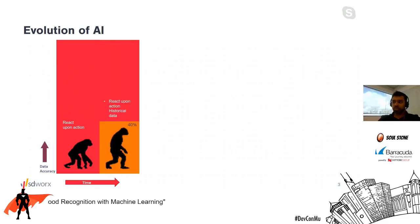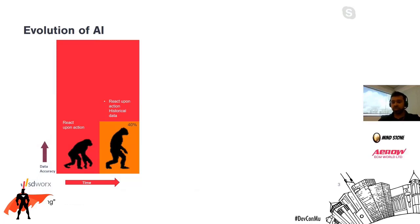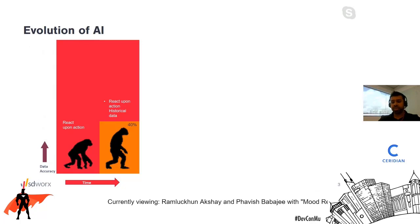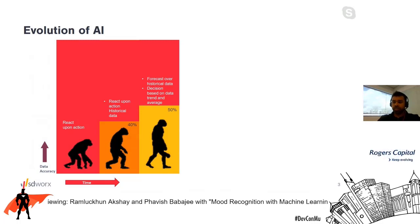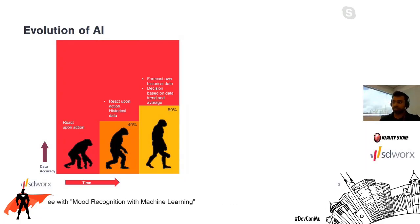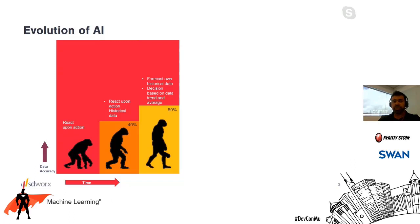At a later phase, what we also saw was about 40% in terms of data accuracy. It was a mixture of reaction and action and also bits and pieces of historical data. The first one was about 2000, an AI concept where it was with the company Sony that they first developed the first humanoid. Then in early 2000, there was the introduction of smart applications with about 50% accuracy, where there was a decision based on data trend and also average.